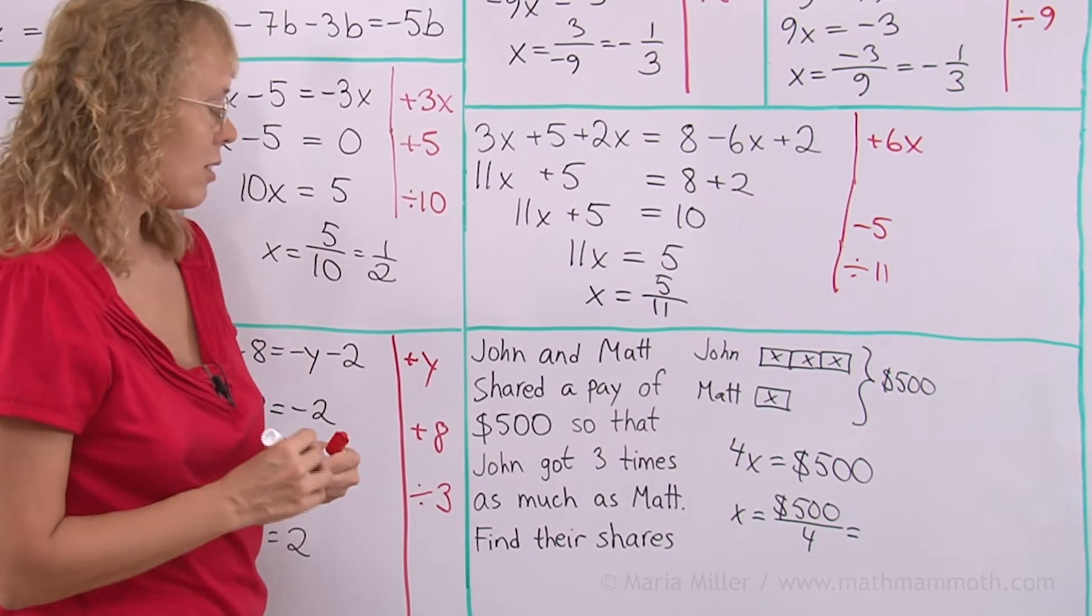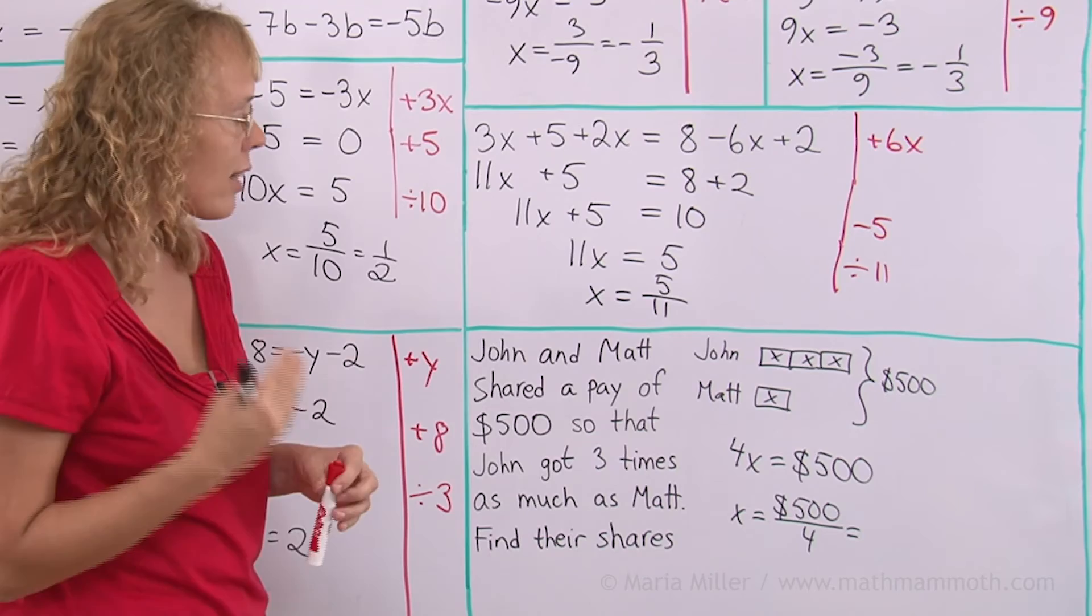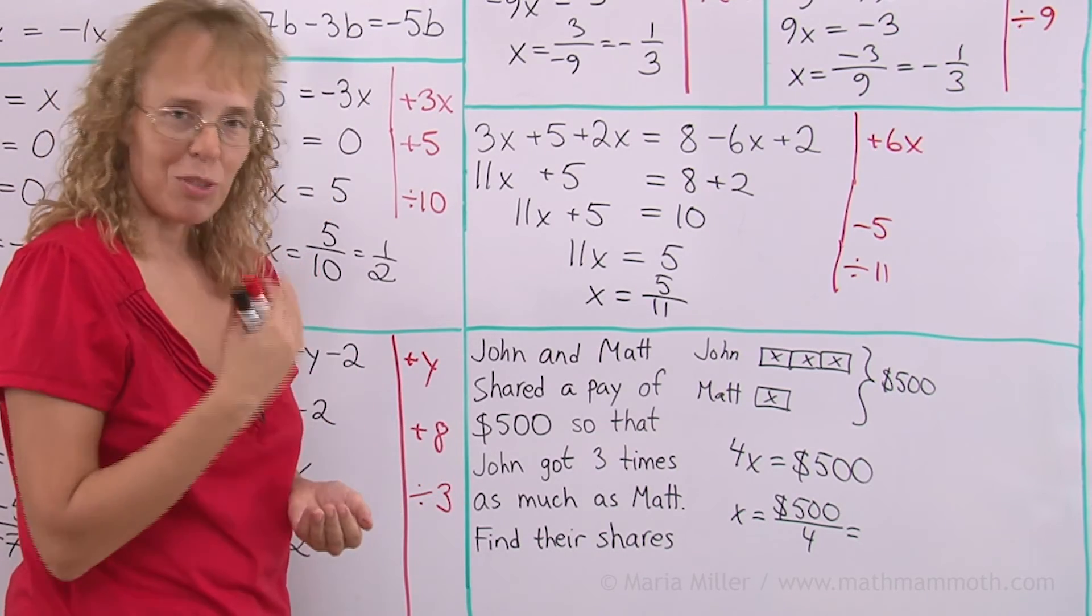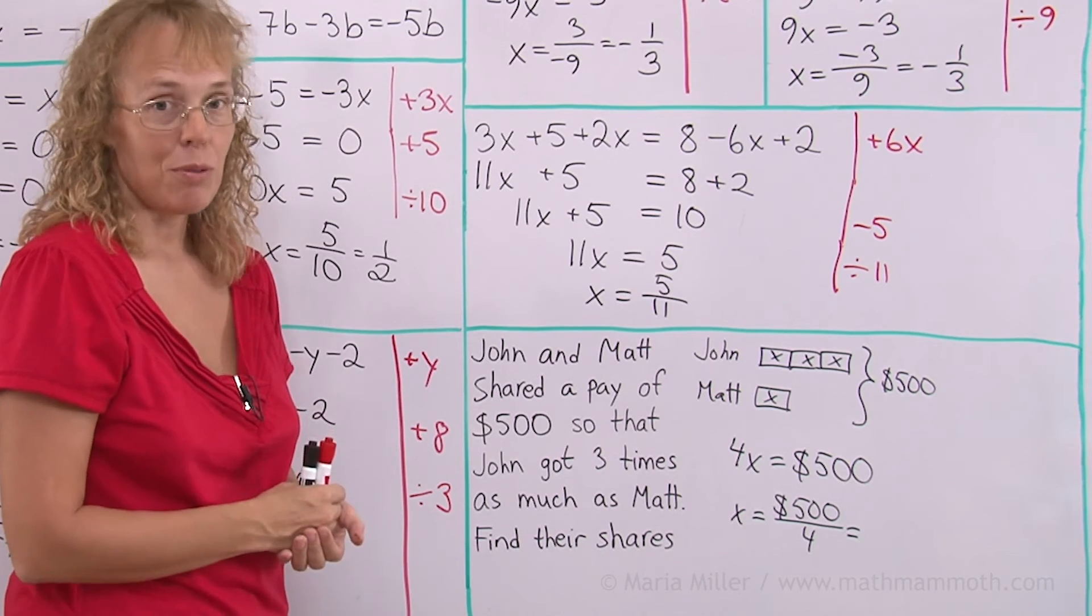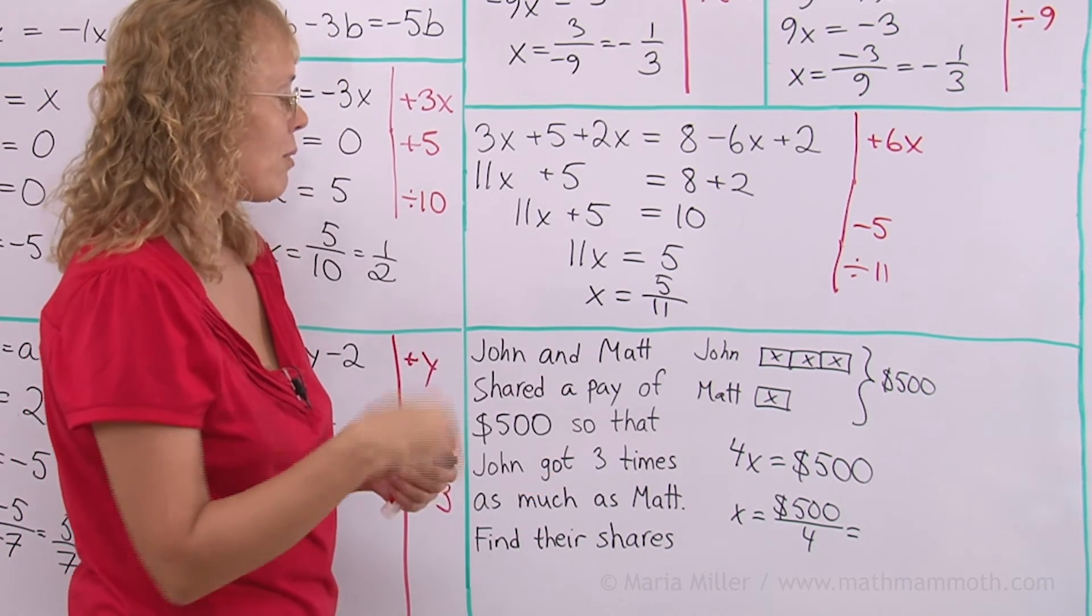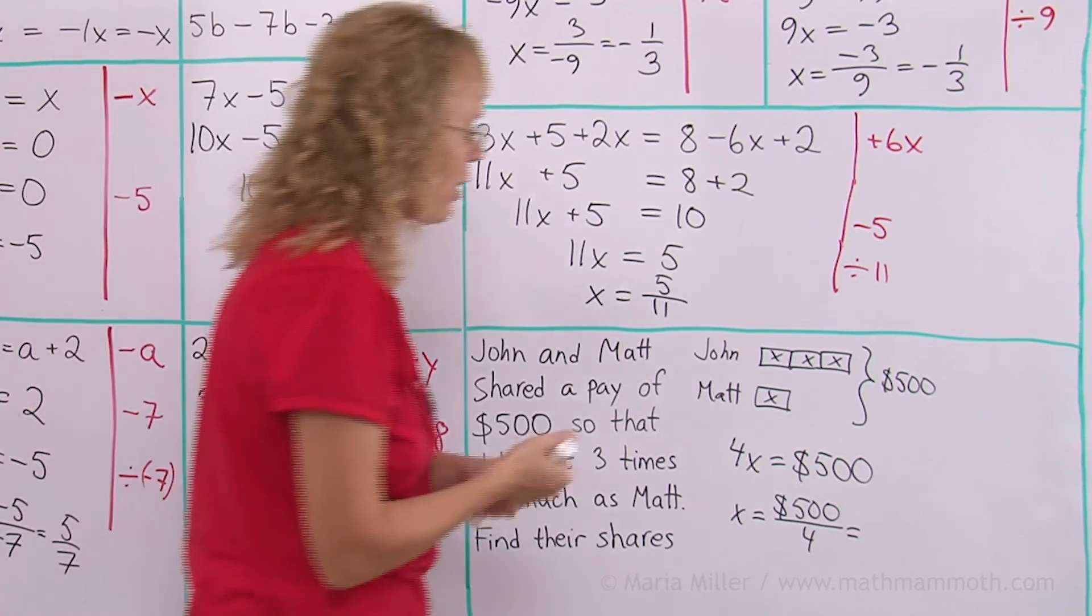If it was $400, then that would be easy to divide, but I can still divide this easily mentally because 500 is the same as 400 plus 100. And both of those are divisible by four easily. So 400 divided by four is 100 and 100 divided by four is 25. So it's $125.